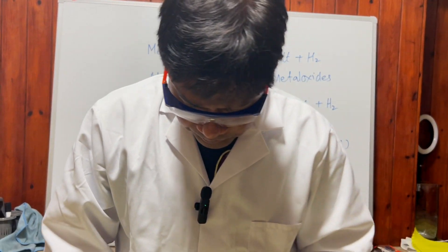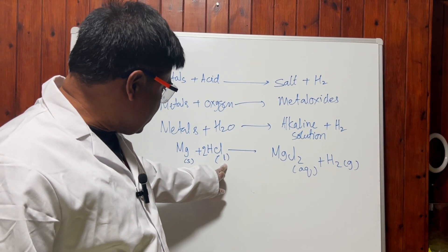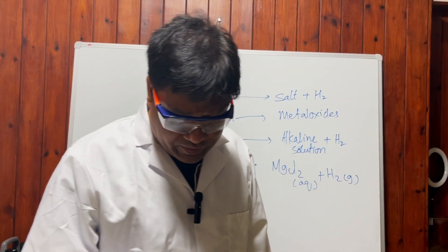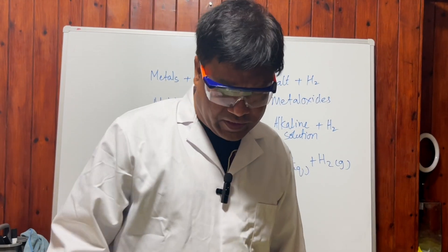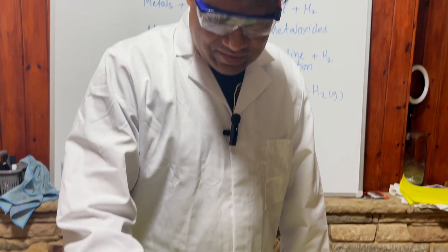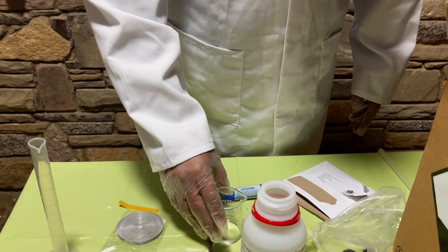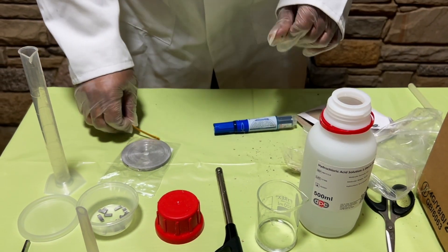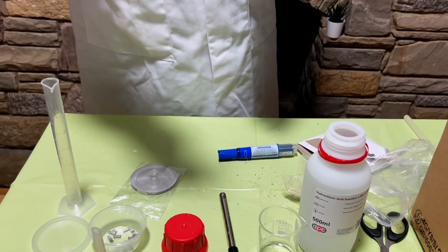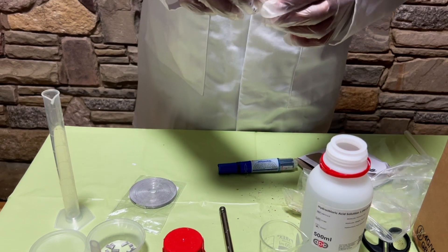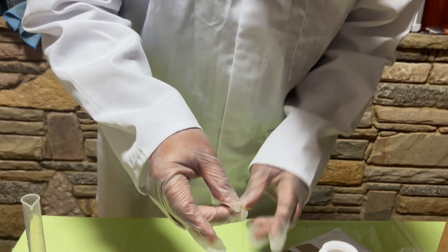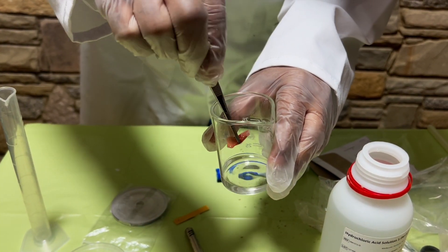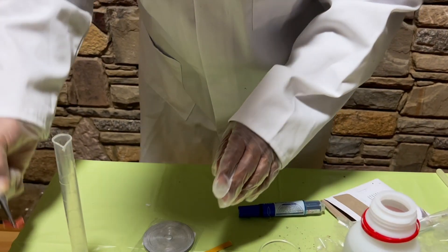When metal reacts with acid — I have hydrochloric acid — it forms salt and hydrogen gas is liberated. Let's see this experiment practically. I've taken a small amount of the acid. Suppose I hide the label — you can test whether it is an acid using pH paper. I add the universal indicator paper into the acid and it turns red immediately. That confirms it is a strong acid.